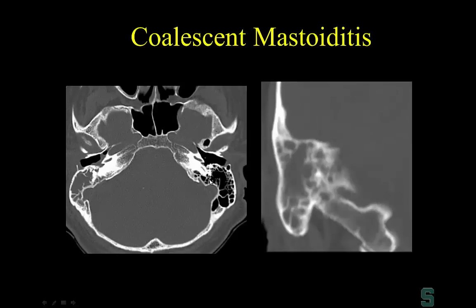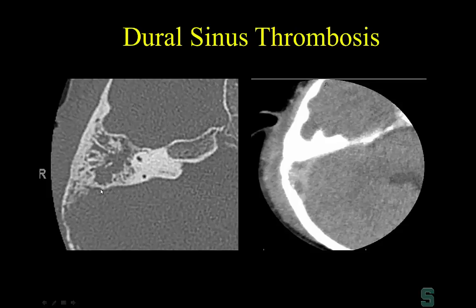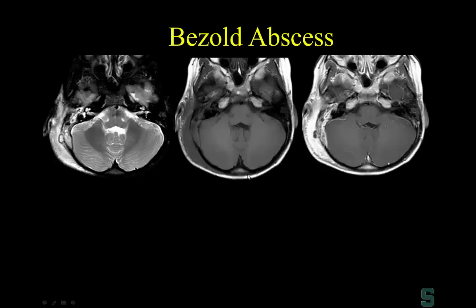If a middle ear effusion becomes infected and is untreated, it can erode the fine bony labyrinth of the mastoid air cells — this is coalescent mastoiditis. Radiologically there can be overlap with cholesteatoma, but remember that mastoiditis is a clinical diagnosis based on pain and tenderness over the mastoid tip. Coalescent mastoiditis can erode the inner cortex of the petrous bone, potentially resulting in dural sinus thrombosis.